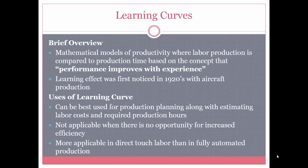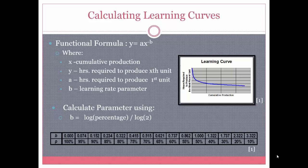Learning curves follow the formula y equals ax to the power of negative b, where x is the cumulative production, y is the hours required to produce the x-th unit, a is the hours required to produce the first unit, and b is the learning rate parameter. This parameter is calculated using the log of the percentage of the learning curve divided by the log of 2 — for example, log of 0.8 or 0.9 divided by log of 2.